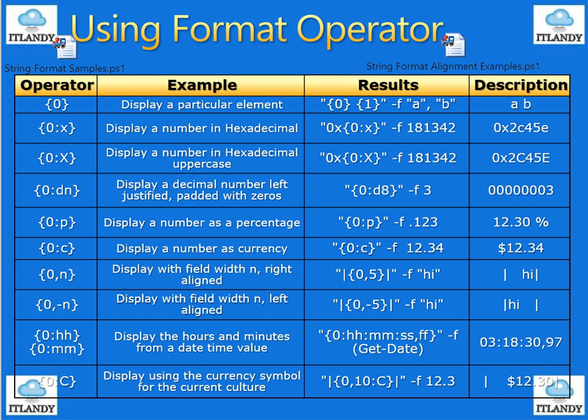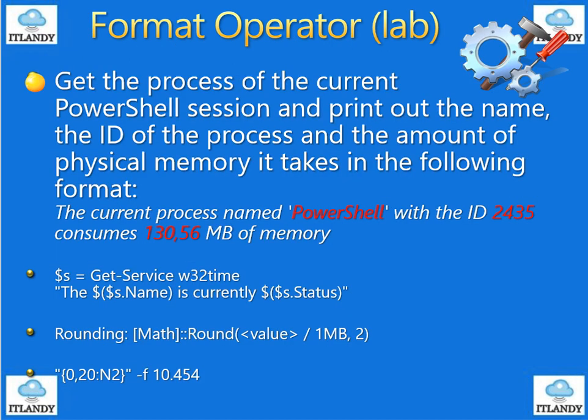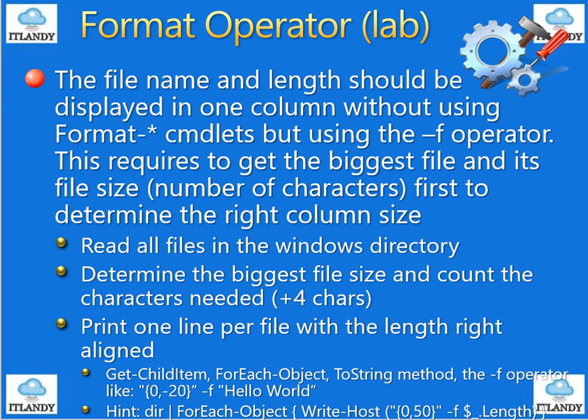I mentioned earlier I have a lab for us. Under the lab of applicable scripts, you can do the following: get the process of the current PowerShell session and print out the name — a very basic example showing the process size. You can see get-services, 132 name, and the output will be a good example. Also, examples around file name, character size, operator, and you can use for-each, get-type, in child name, for-each-object, and the toString method to get the information.